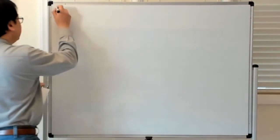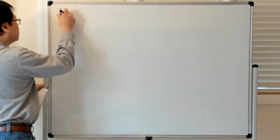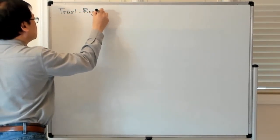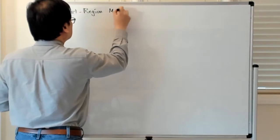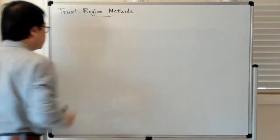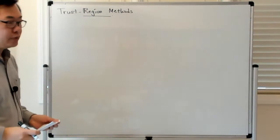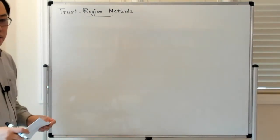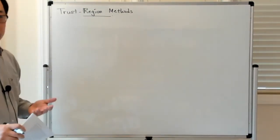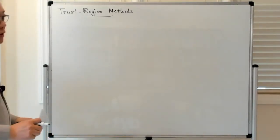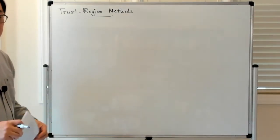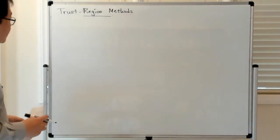We're going to talk about trust region methods. The essential idea behind trust region methods is to combine the local super-convergence properties of Newton methods with the guaranteed global convergence of line search methods.